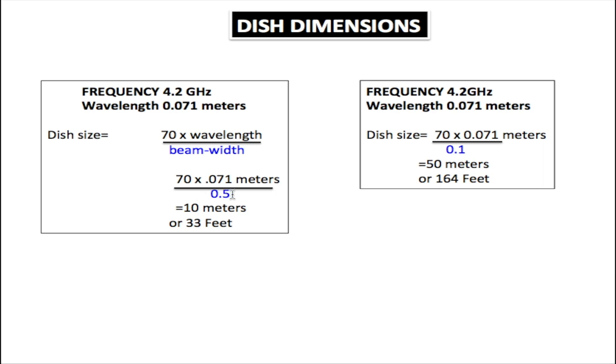We multiply 70 by 0.071 meters and divide it by 0.5 degrees, and we get 10 meters or 33 feet, which is the size of our dish. Everything is the same for the equation. The only thing we changed was the 0.1 for the beam width, and that changed the size dish from 10 meters to 50 meters. So we have a much larger dish just by changing the beam width.